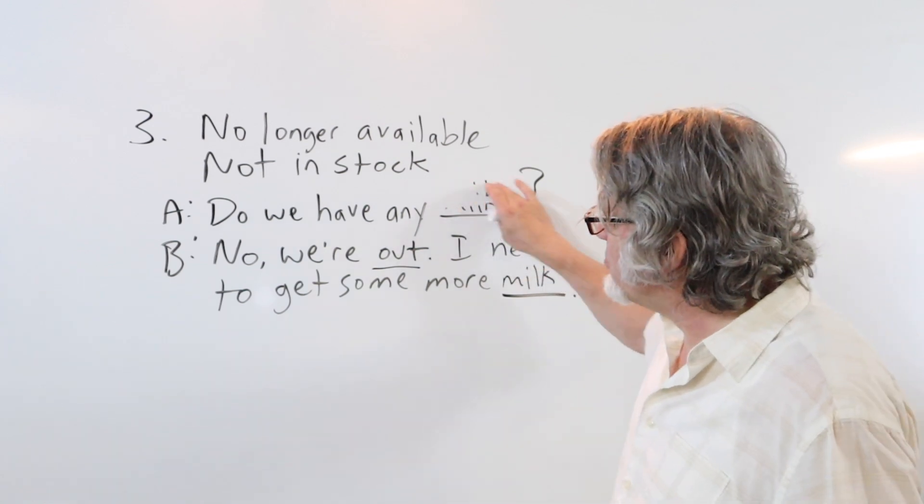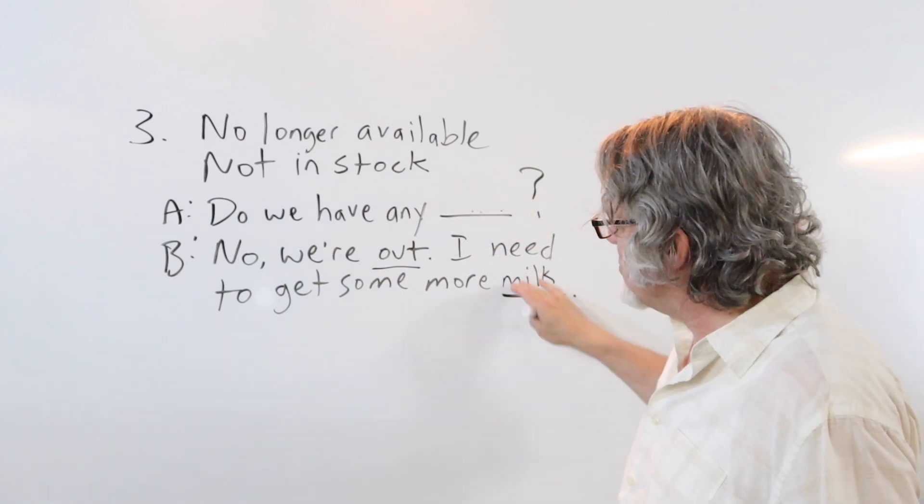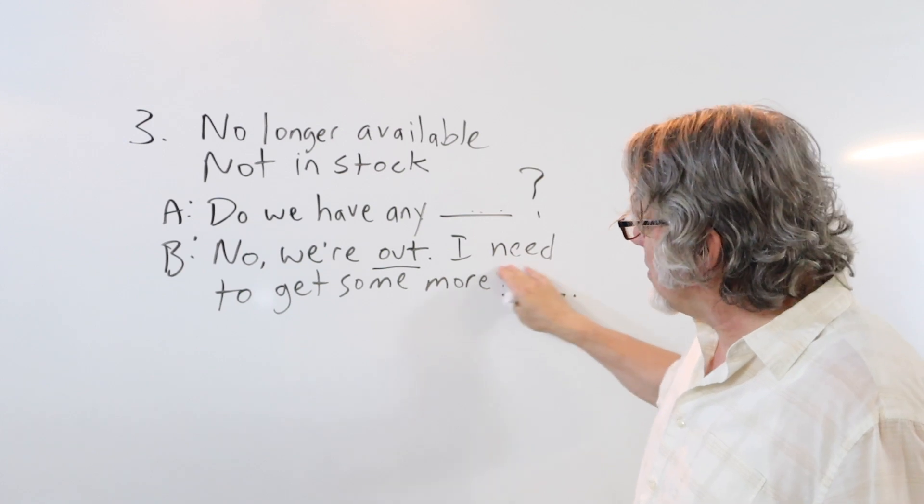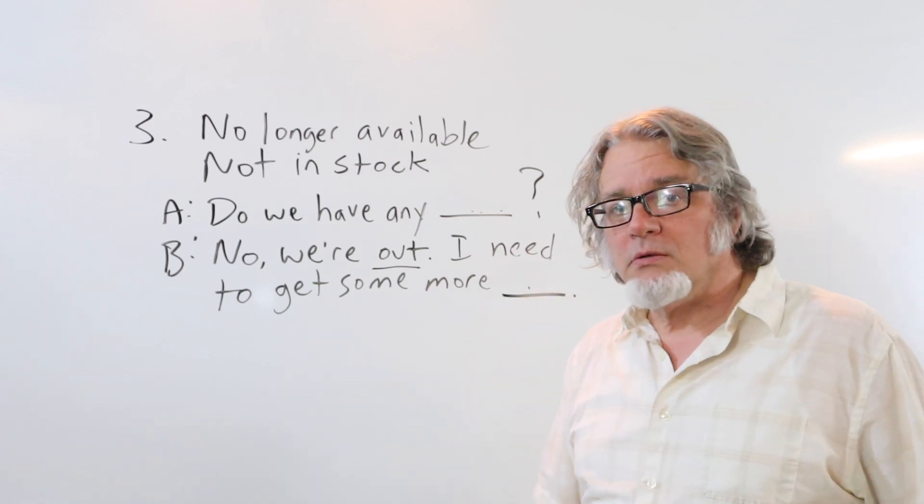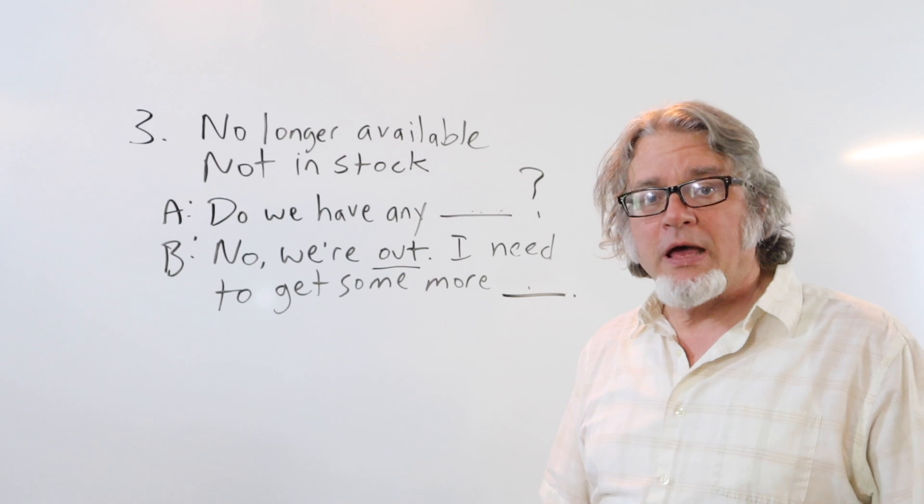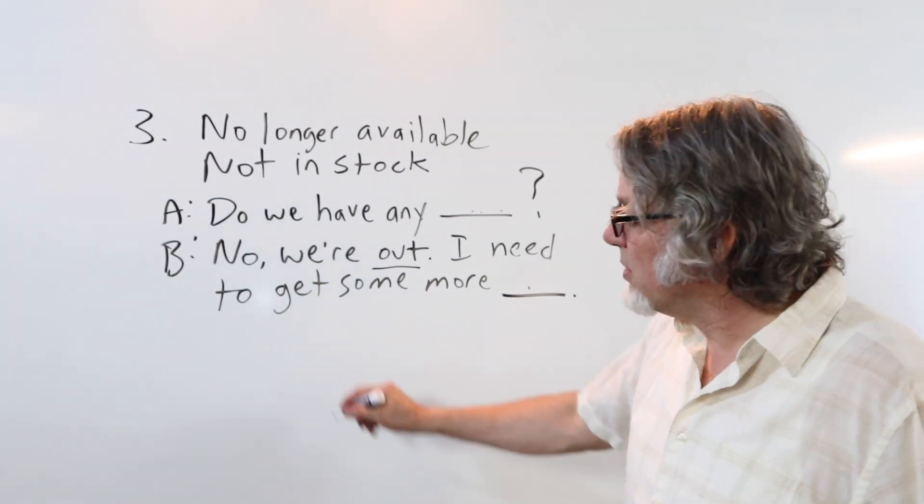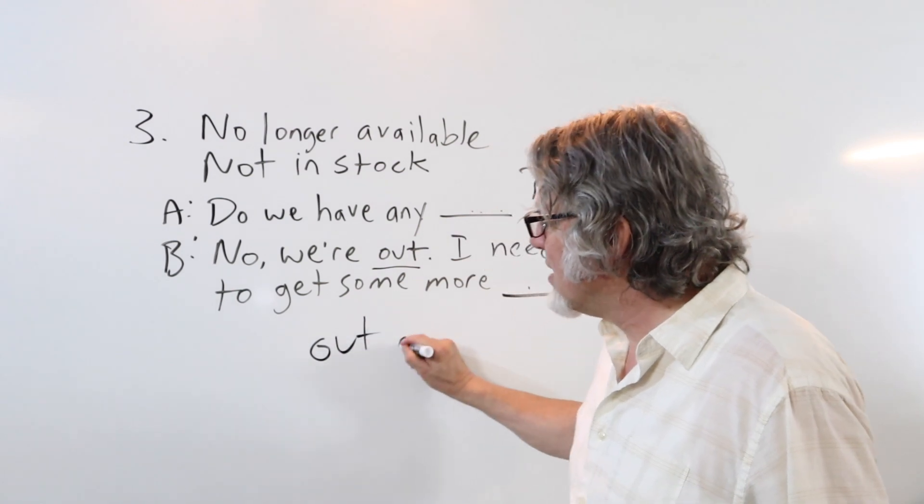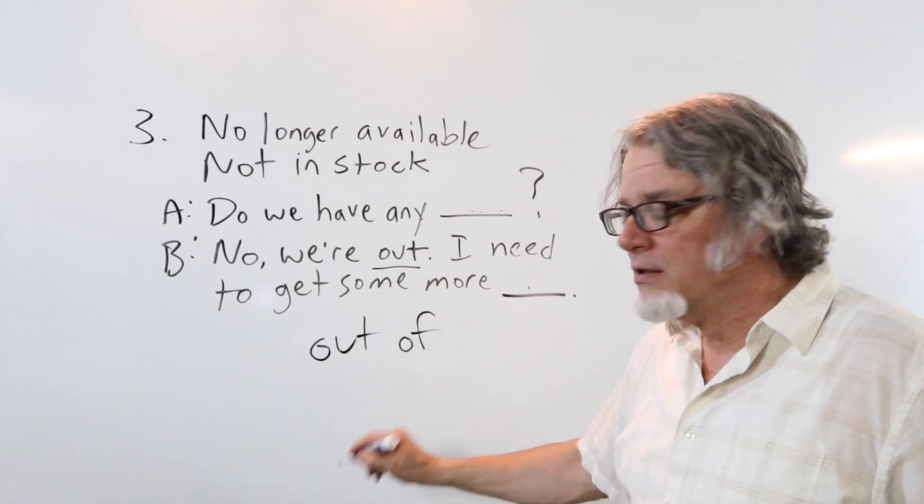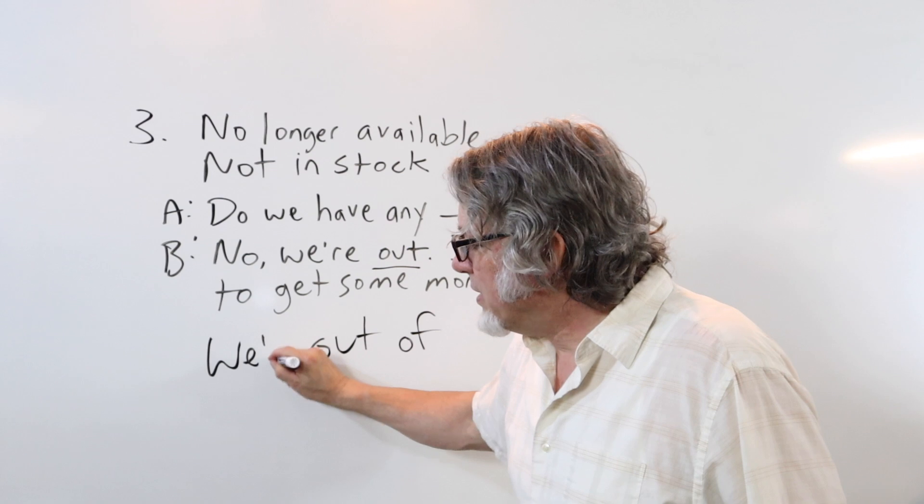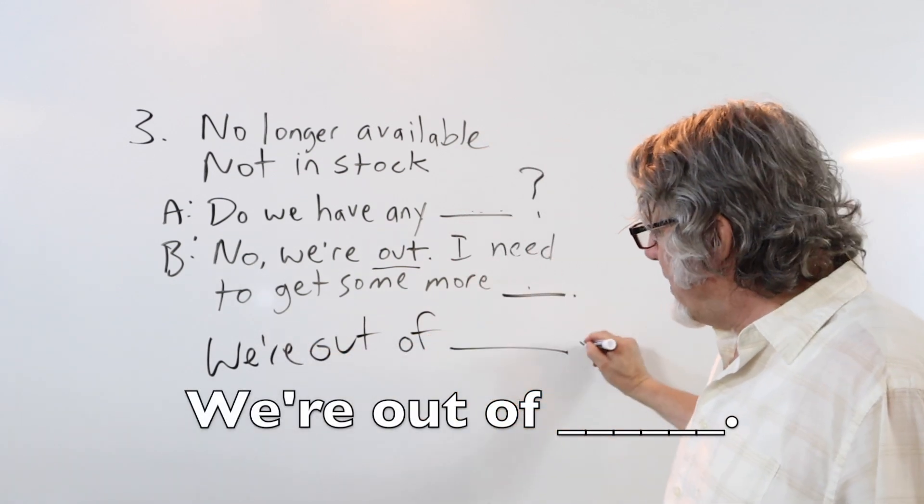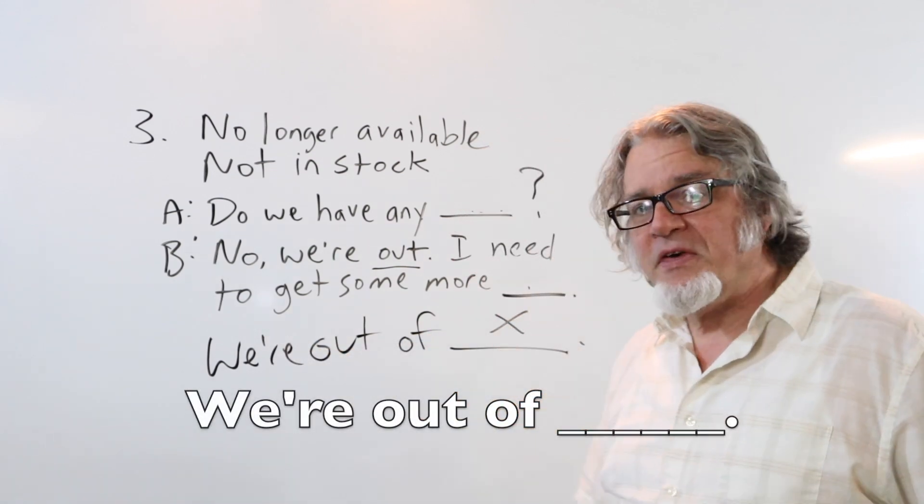In this position, you can put just about anything that you need for your household. It could be milk or bread or eggs or toilet paper. This is similar to out of, we're out of, and then here's the thing.